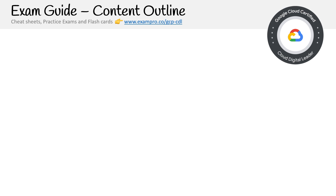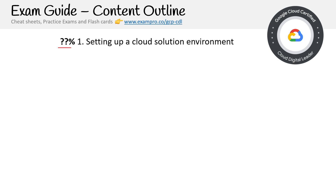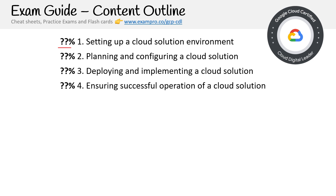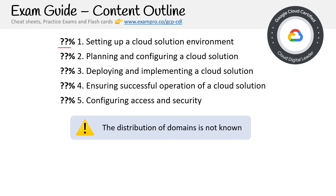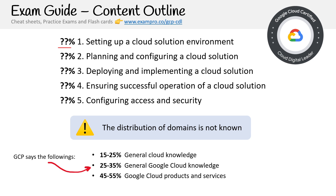For the content outline, here's another oddity — they don't break down each of the domains with percentages. Usually you'd have something like '20% of questions from this domain' so you know where to focus, but Google doesn't do that. The domains are: setting up a cloud solution environment, planning and configuring a cloud solution, deploying and implementing a cloud solution, ensuring successful operation of a cloud solution, and configuring access and security. The distribution of these domains is not known. On the marketing website they mention general knowledge, general Google Cloud knowledge, and Google Cloud product and services — but this breakdown is not very helpful, since we need to know what specifically they're testing.